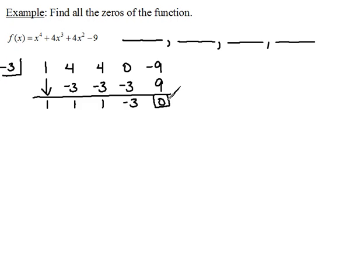It worked. Now, by doing this, we have found that negative 3 is one of our zeros. We also know that x plus 3 is a factor. So if we had to write it in factored form, we could do that also.